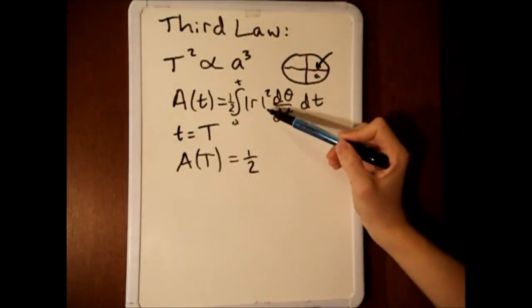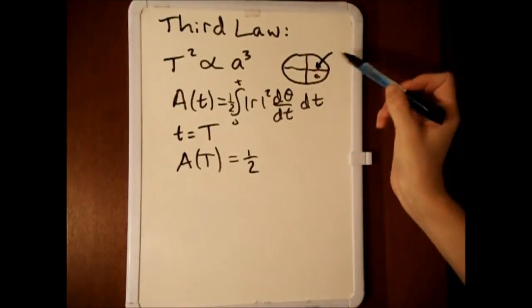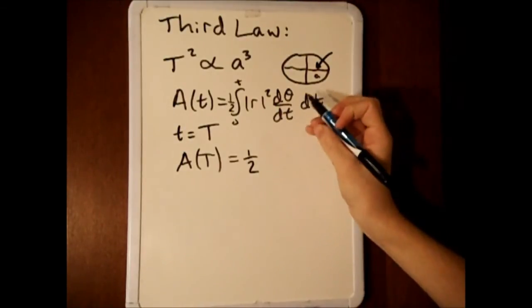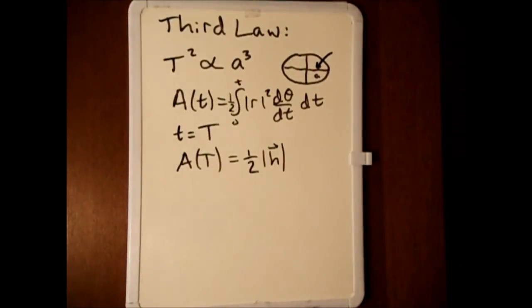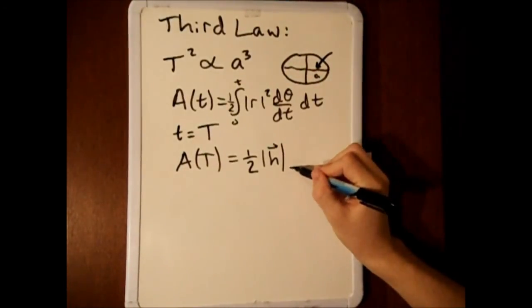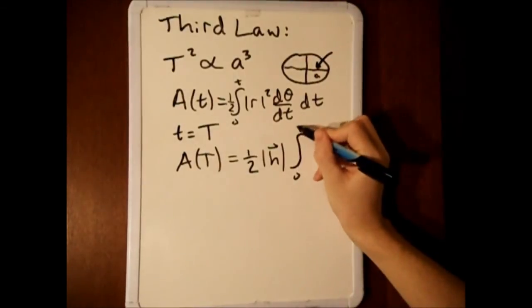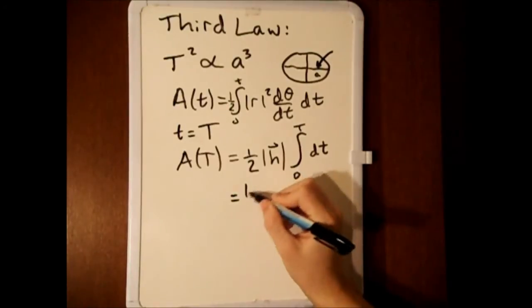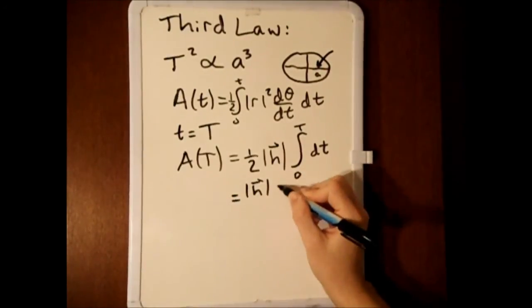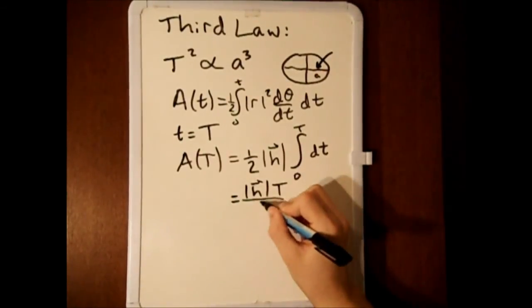Remember that the magnitude of r squared times d theta by dt is the same as the magnitude of the constant vector h, meaning that we can simply rewrite this as the integral from 0 to T dt. Evaluating the integral yields the magnitude of h times T over 2.